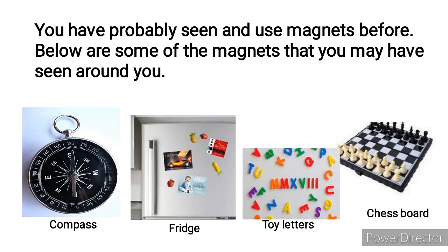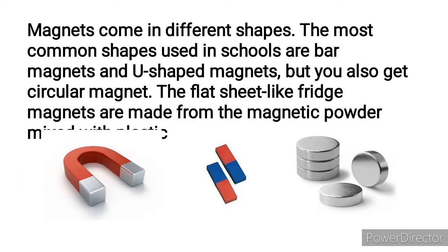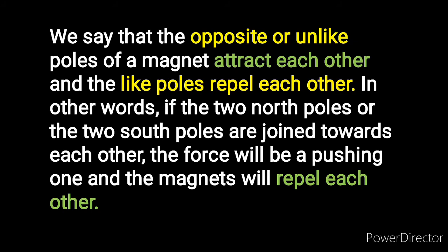We then started talking about magnets. You can find magnets in a compass, in your fridge, and in other items. Some magnets are made by grinding magnetic materials such as lodestones and mixing with raw plastic or rubber to make a plastic magnet. Magnets come in different shapes — the most common shapes used in schools are the bar magnet and the U-shaped magnet, and we also have the ring or circular magnet.